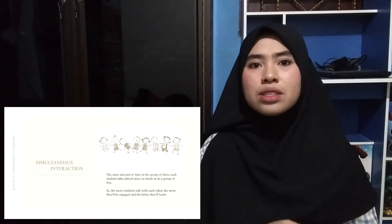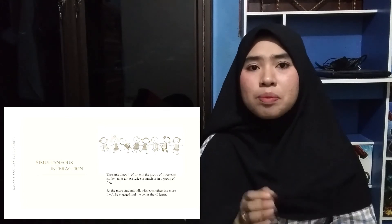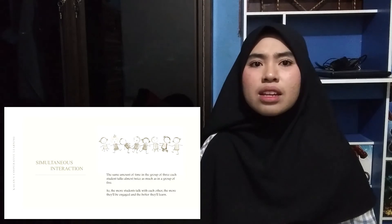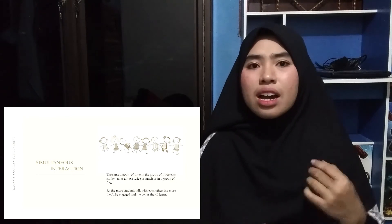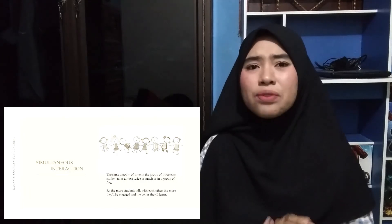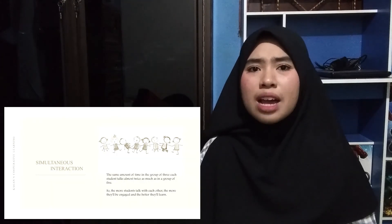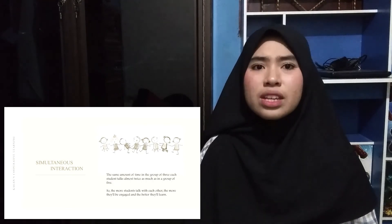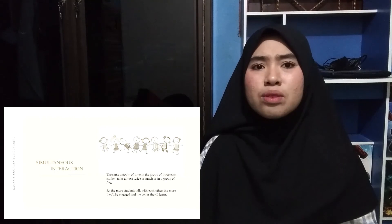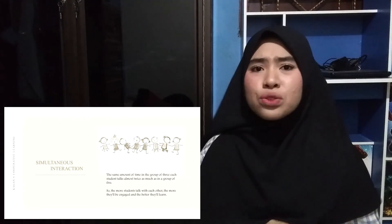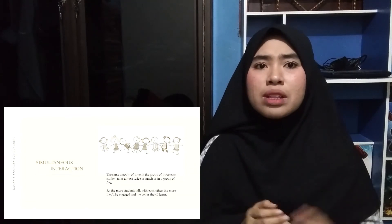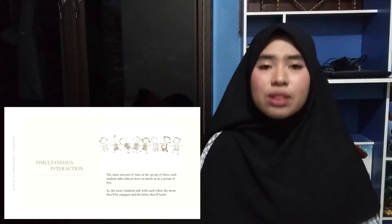Without calculating the percentage of active participants at any one moment, the teacher might think that a group of five is as good as a group of four for promoting active engaged interaction. In fact, in the same amount of time in a group of three, each student talks almost twice as much as in a group of five. So, the more students talk with each other, the more they will be engaged and the better they will learn.